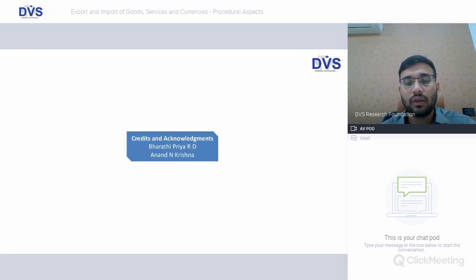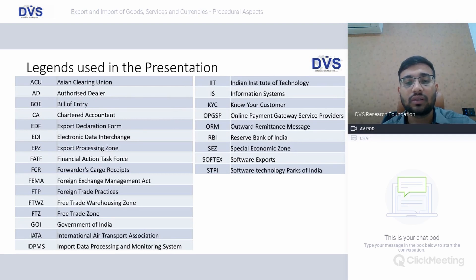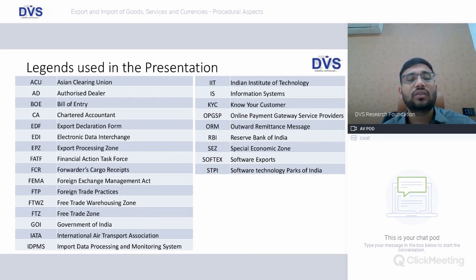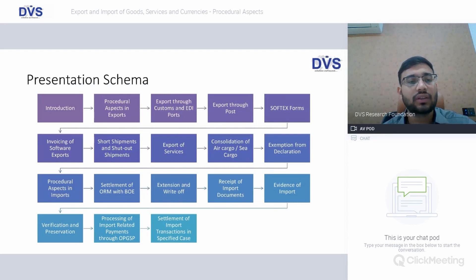Before we start, I would like to acknowledge the efforts of Bharati and Anand for this presentation. The legends used are similar to the earlier webinars, with a few additions: SOFTEX (software exports), STPI (Software Technology Parks of India), OPGSP (Online Payment Gateway Service Providers), FTWZ (Free Trade Warehousing Zone), FATF (Financial Action Task Force), EDI (Electronic Data Interchange), and EPZ (Export Processing Zone).